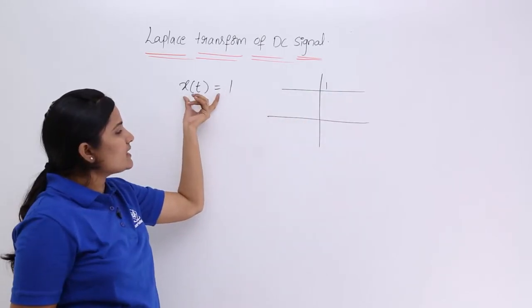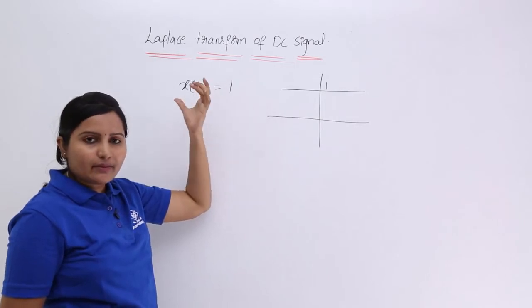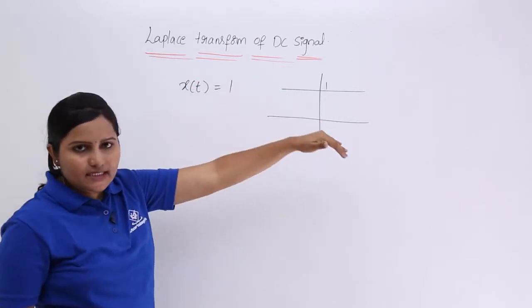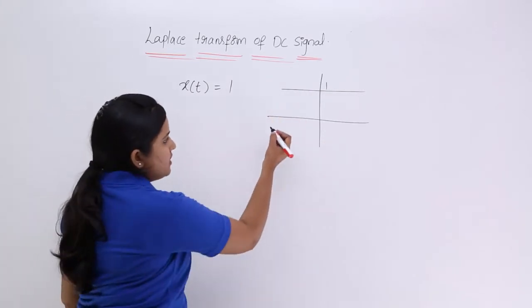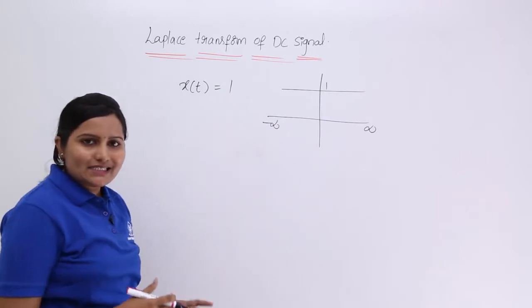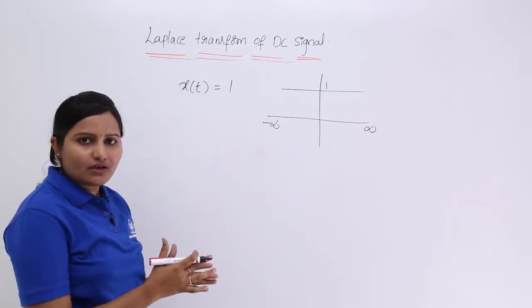So I am considering the signal X of T is equivalent to 1. This can be treated as DC signal from minus infinity to plus infinity that is equivalent to 1. From minus infinity to plus infinity my DC signal voltage is equivalent to 1.